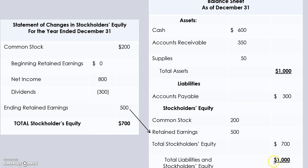You've probably already noticed that there is an order to the financial statements. You must prepare the income statement first because you need the net income from that statement to prepare the statement of changes in stockholders' equity. And you need the stockholders' equity total in order to prepare your balance sheet.